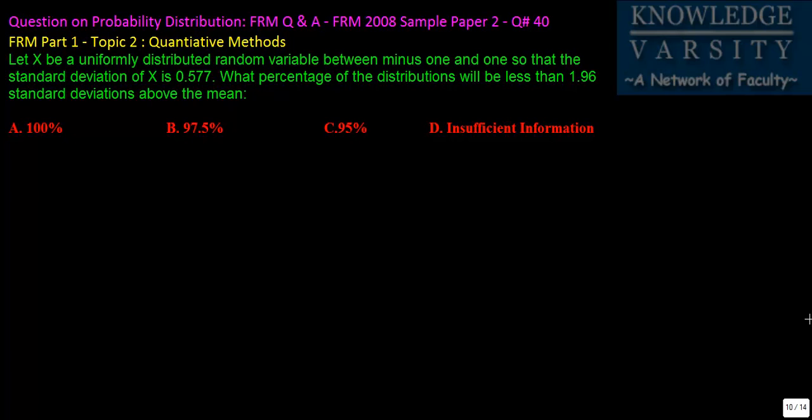As you know, probability distribution is a part of quantitative methods. The problem is, there is a uniformly distributed random variable. Please note that this is where most people have got wrong in this problem. It is a uniformly distributed random variable between minus one and one.